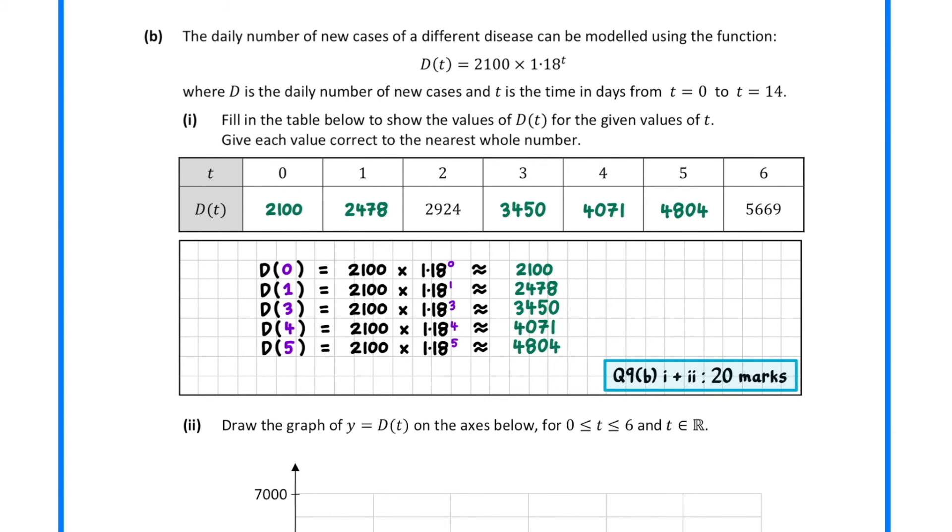In part b, we are given a function D(t) which models the number of daily new cases for a different disease. In part 1, we must fill in missing values in a function table. This involves subbing in the given t values into the function definition. Subbing in t equals 0 gives an answer of 2100. t equals 1 gives an answer of 2478. t equals 3 gives 3450, t equals 4 gives 4071, and t equals 5 gives 4804.